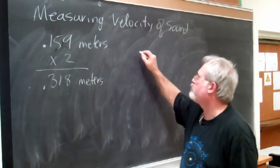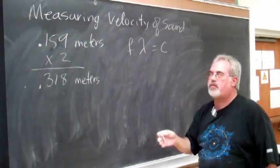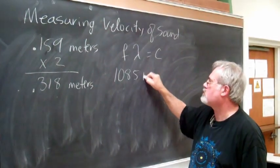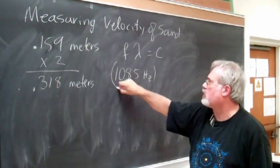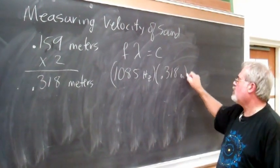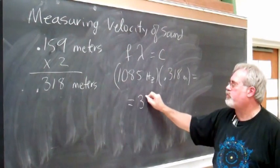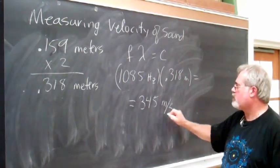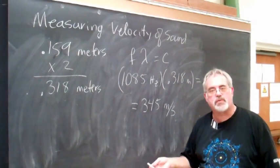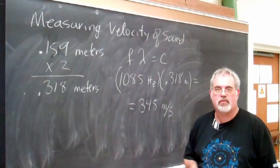Remember that frequency times the wavelength will give us the speed. The frequency we were using from the signal generator was 1,085 hertz. Times our wavelength gives us 345 meters per second. The accepted value is about 344 meters per second. We're within 0.3 percent of this result. Good work.